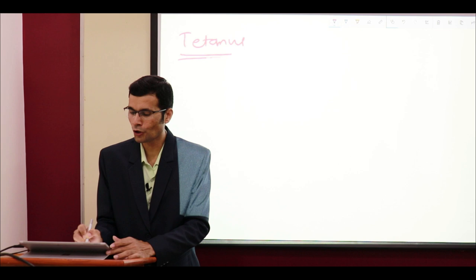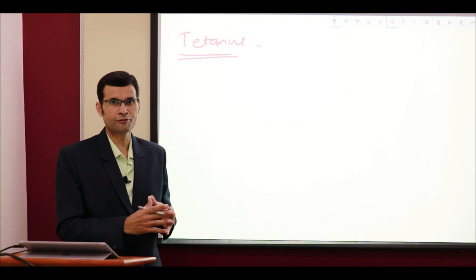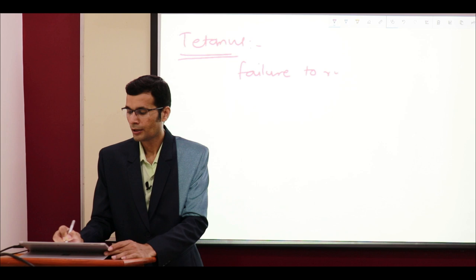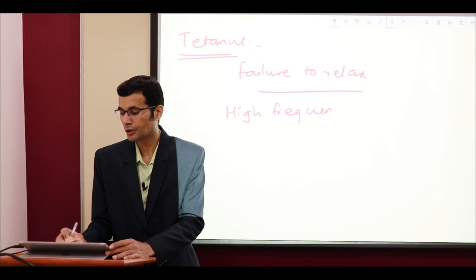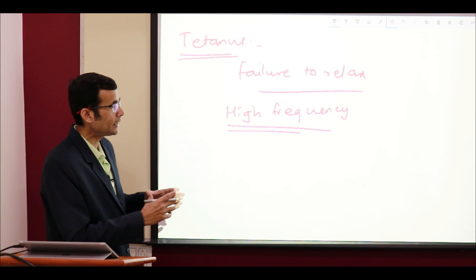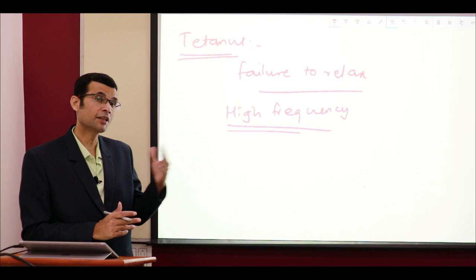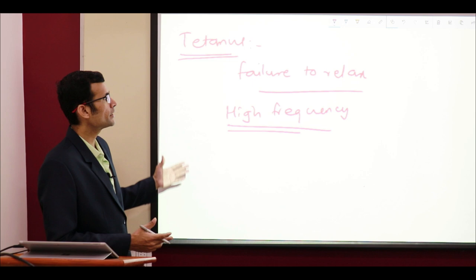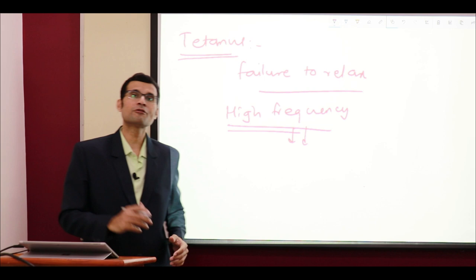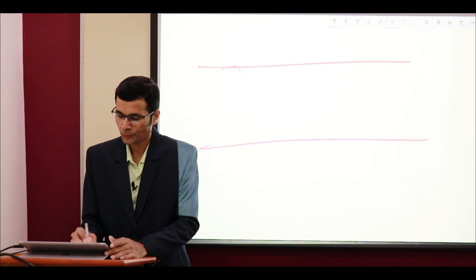Second, tetanus — the physiological tetanus. The definition: a sustained state of contraction and failure to relax. That happens due to high frequency stimulation to the muscle. The key feature of physiological tetanus is high frequency stimulation to the muscle. In tetany too there was high frequency stimulation, but that was because of the sodium channels behaving erratically. Whereas here, even physiologically, if there is high frequency stimulation to the muscle, the muscle fails to relax. Why so?